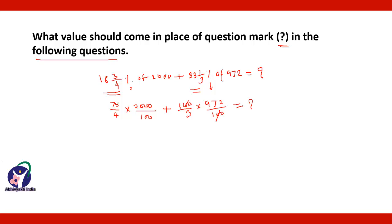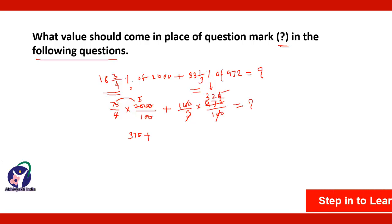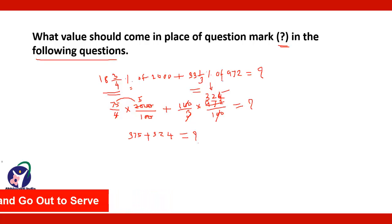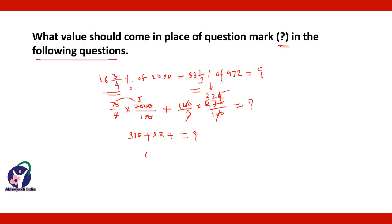The 100s will get cancelled. Then: 3×1=3, 3×3=9, 3×2=6, 3×6=12, 3×4=12. The two zeros will get cancelled. 4×1=4, 4×5=20. So you get 75 into 5, that is equal to 375, plus 324, which equals question mark. Together we get 699, and therefore the question mark can be replaced by 699.